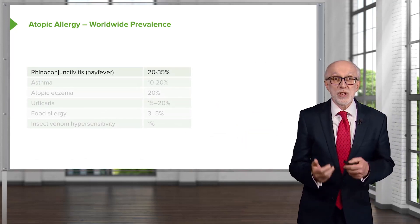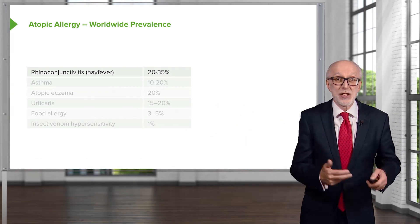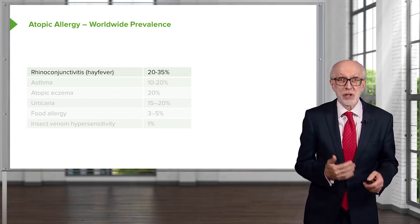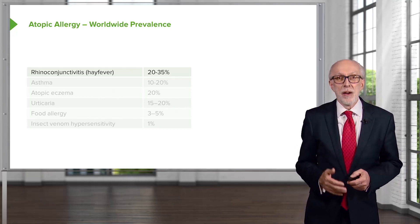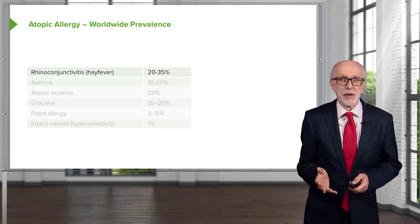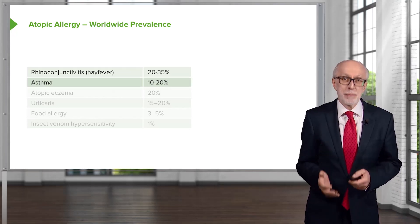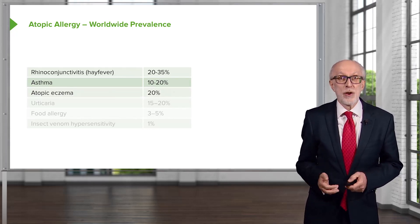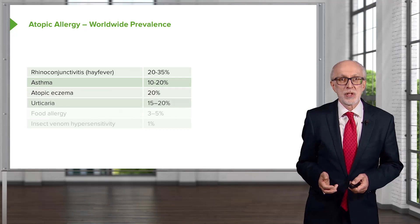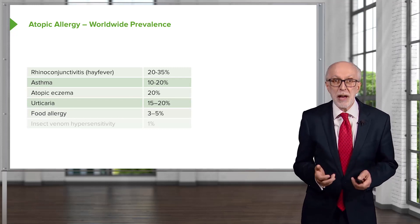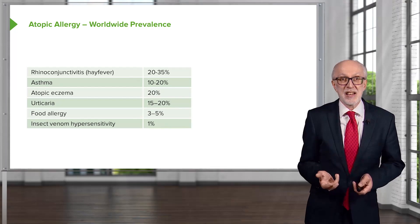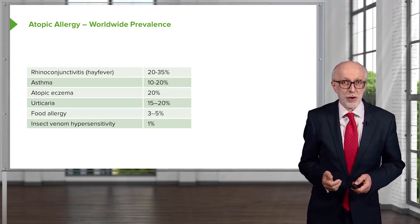There are a number of different types of atopic allergy — that is, allergy caused by excessive production of IgE. Rhinoconjunctivitis, which you may know as hay fever, affects around 20 to 35% of individuals. Asthma affects around 20% of individuals. Atopic eczema again around 20%. Urticaria has similar numbers. Food allergy affects around 3 to 5% of individuals, and insect venom hypersensitivity affects about 1 in 100 people.